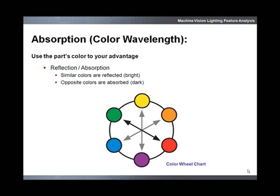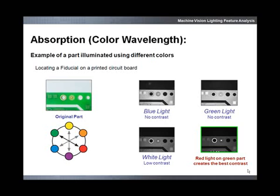A light source and part that are opposite colors will reflect less light and the feature will be dark. You can use this handy color wheel to determine opposing colors. In this example, the application is to locate a fiducial on a printed circuit board. The goal is to make the green background appear darker and to create contrast against a light colored fiducial. We reference the color wheel to determine that red is the opposite color of green and should be used for the light source. The images on the right demonstrate the effect of different colored lighting sources, including red, which provides the best contrast.